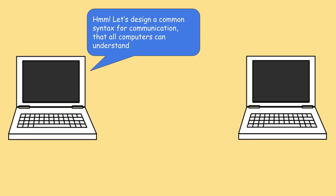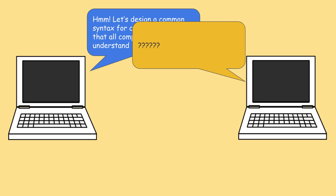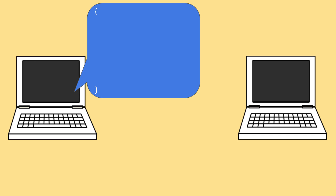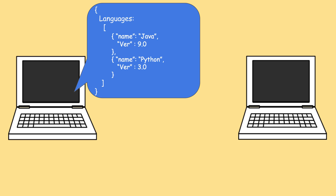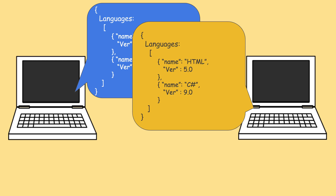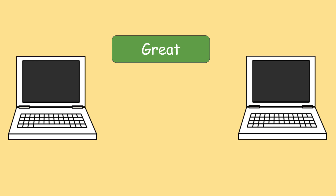So the first computer says, 'Let us design a common syntax, a structural formatted way of representing data so that all computers can understand it.' The first computer designs a formatted way of exchanging data: two curly braces, a tag called languages, a square bracket start and stop, then the first dataset within curly braces, then the second. Now the second computer understands this and responds back with the languages it can work with.